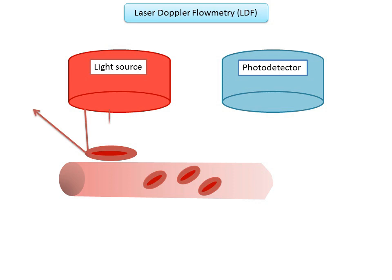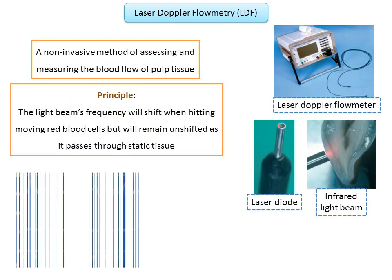Whereas if the light hits a moving cell in a blood vessel like an RBC, there is a shift in the light spectrum of the scattered light according to Doppler flowmetry, and this scatter will be detected by the photo detector. A diode is used to project an infrared light beam through the crown and pulp chamber of a tooth. The infrared light beam is scattered as it passes through the pulp tissue, and the average Doppler frequency shift will measure the velocity at which the red blood cells are moving.